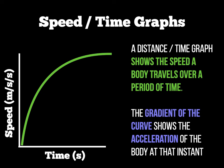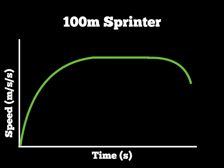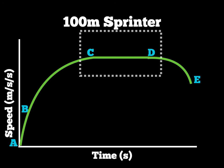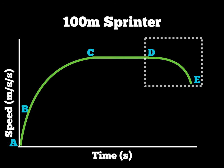If asked to plot or describe a speed-time graph of a 100-metre sprinter, we again put in points to help describe the shapes. A to B: acceleration. B to C: mainly acceleration but starting to slow, so some acceleration and deceleration. C to D: constant speed — not constant acceleration. D to E: deceleration.